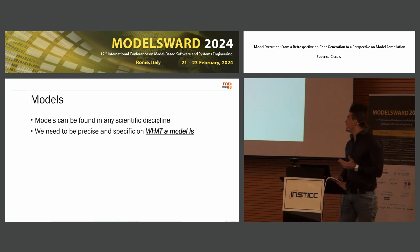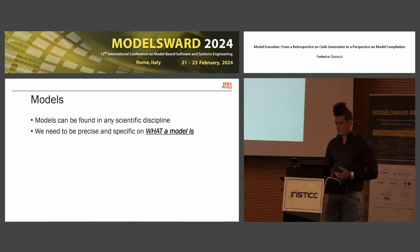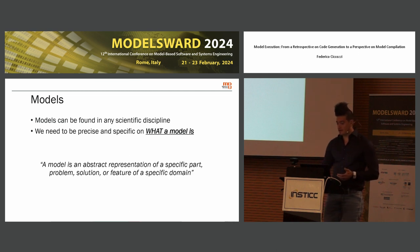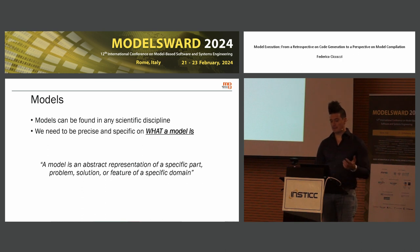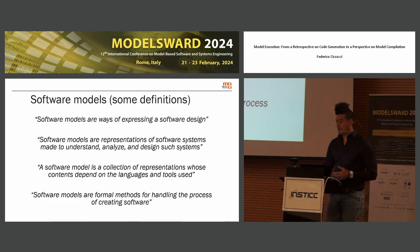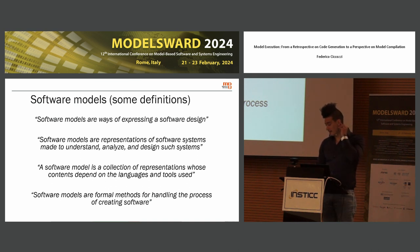As you know, models can be found in any scientific discipline, and we need to be quite precise when we actually talk about models. A generic definition of a model is that it is an abstract representation of a specific part, problem, solution, or feature of a specific domain — something that actually represents a part of reality. There are several definitions of what a software model is; I just picked four of them and put them here.